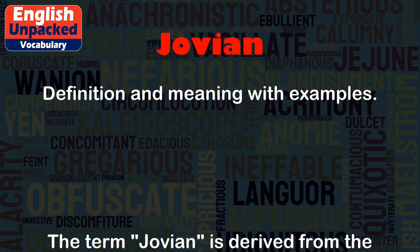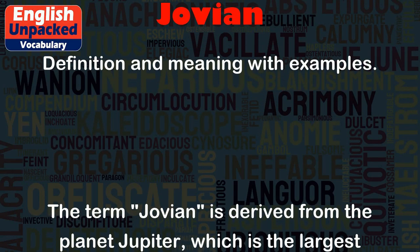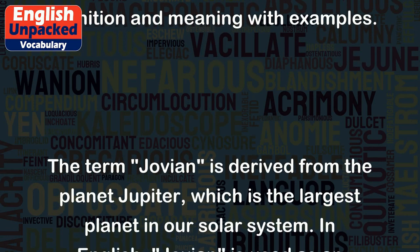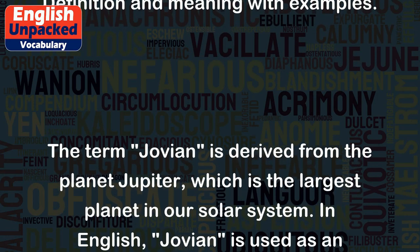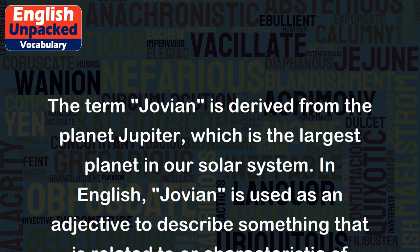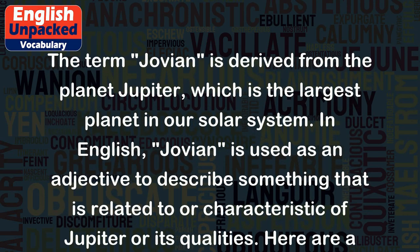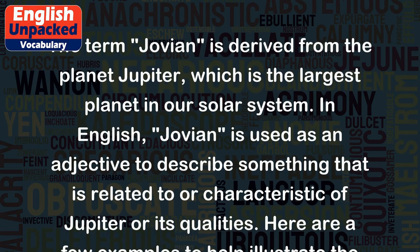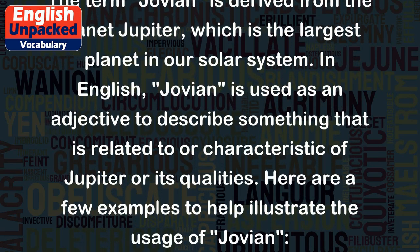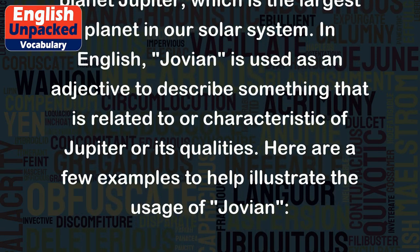Jovian. The term Jovian is derived from the planet Jupiter, which is the largest planet in our solar system. In English, Jovian is used as an adjective to describe something that is related to or characteristic of Jupiter or its qualities.